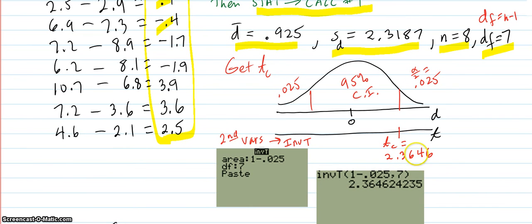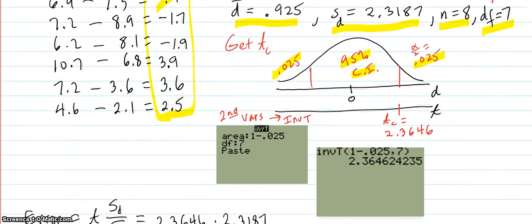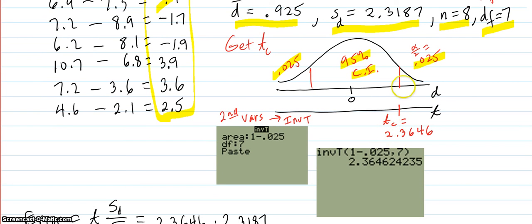Then you set up your picture to make sure you know what's going on. It's a 95% confidence interval, so there's 0.025 in each tail. So you have to find your T value on that tail. So you do your inverse T that you're getting from second VARS, inverse T.